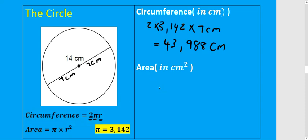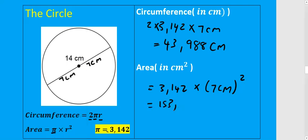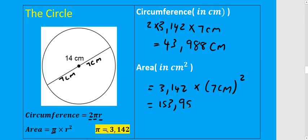Now for the area of the circle, calculated in centimeters. The formula is pi times radius squared. The value of pi is 3,142 and our radius is 7. So 3,142 multiplied by 7 squared gives us 153,958 centimeters squared. Area is always squared.